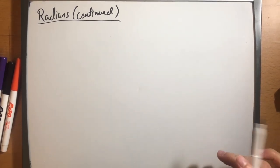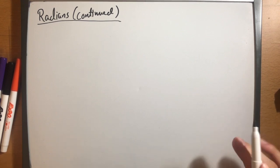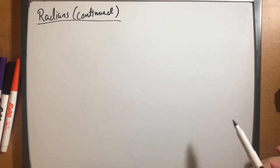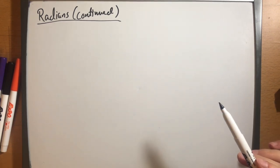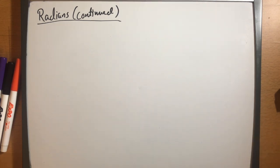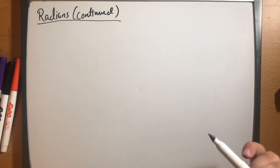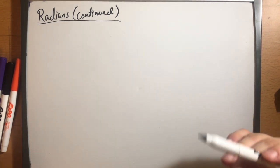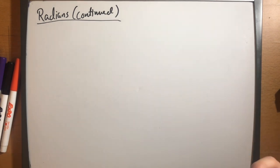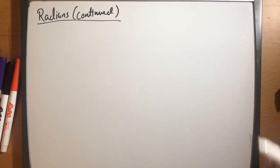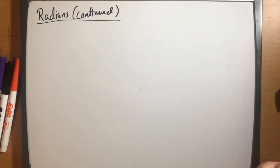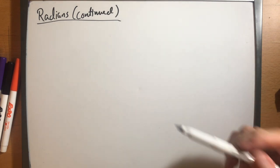Hello and welcome to the next video on trigonometry. In this video I wanted to continue on the topic of radians, because it is still a brand new concept and it is a little bit tricky to understand at first. I just want to spend some time going through radians again and explaining some tips and tricks to help you solve conversion problems between radians and degrees a lot easier. I also want to review the main angles in a circle, which is very useful especially for later on in trigonometry.